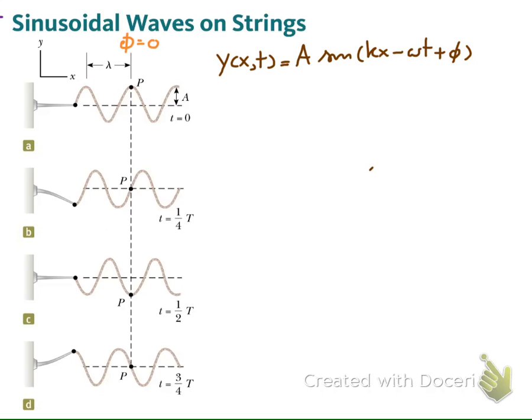The velocity of the traveling wave, as we have discussed, is v is equal to ω over k. This is the velocity of the wave. Or we may say, since we are interested in the magnitude, we can say that it is the wave speed.